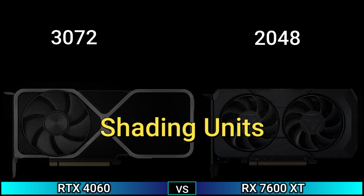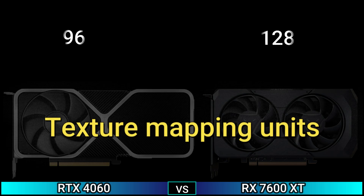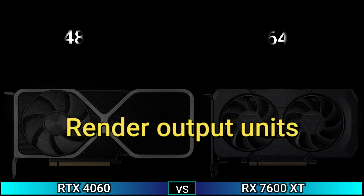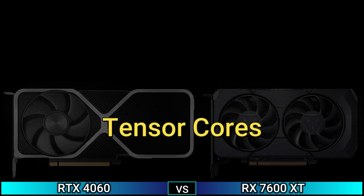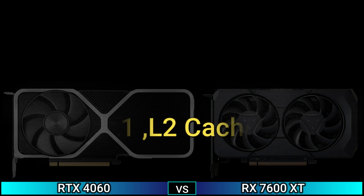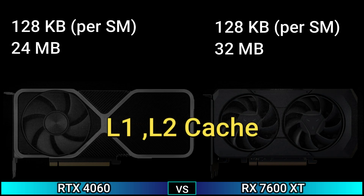Render Output Units: 48 and 64. Shader count: 24. Tensor Cores: 96. L2 Cache: 128 KB per 24 MB and 128 KB per 32 MB.